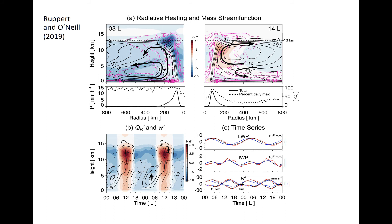The top plots show radiative heating and stream functions during nighttime, around 0300 local time, and daytime, around 1400 local time. Blue shading indicates radiative cooling, while red denotes radiative heating. During the night, deep upward motion is present near the core of the cyclone, within about 200 kilometers, and two overturning circulations are present — one deep and one moderately deep in the lower half of the troposphere. The bottom left panel is a time series of anomalous radiative heating and vertical motion relative to the long-term mean as a function of time of day. Upward motion is maximized at low levels during the night and at upper levels during the day, as part of a radiatively driven overturning circulation in which upward motion is partially driven by shortwave heating aloft in deep cumulonimbus clouds.